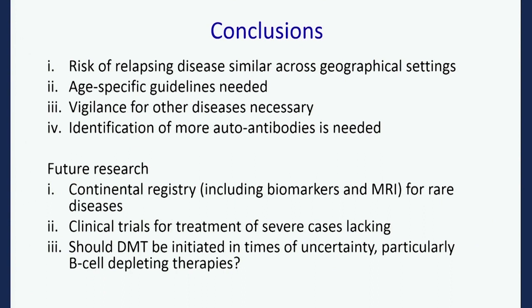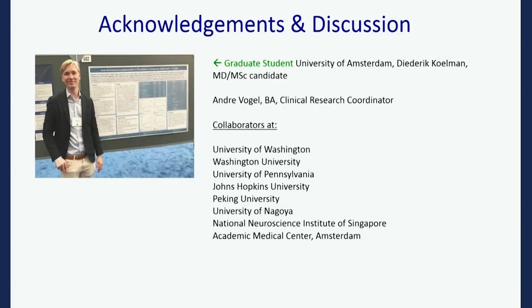To conclude: risk of relapsing disease is similar across geographical settings. We need age-specific guidelines — the international pediatric study group has done well for children, but we need criteria for adult ADEM to enable large-scale epidemiological studies and trials. We need continuing biomarker development and a registry for ADEM. Questions about emerging therapies are also relevant and need to be tried. Thank you to the graduate students and all collaborators across many hospitals.